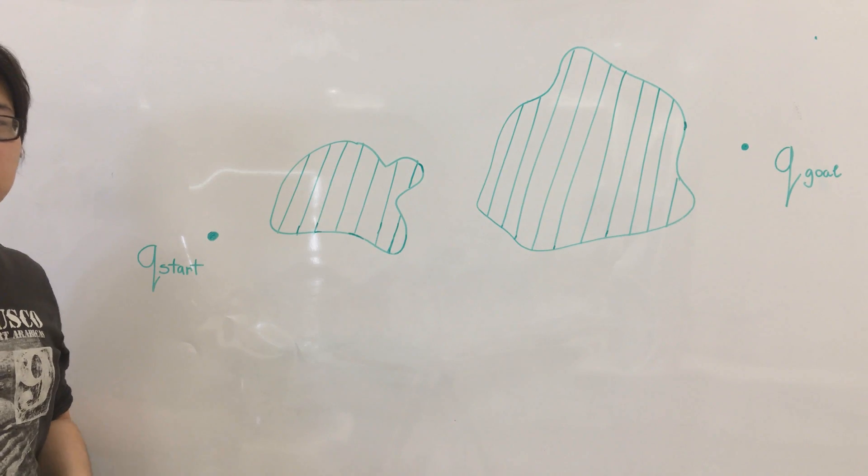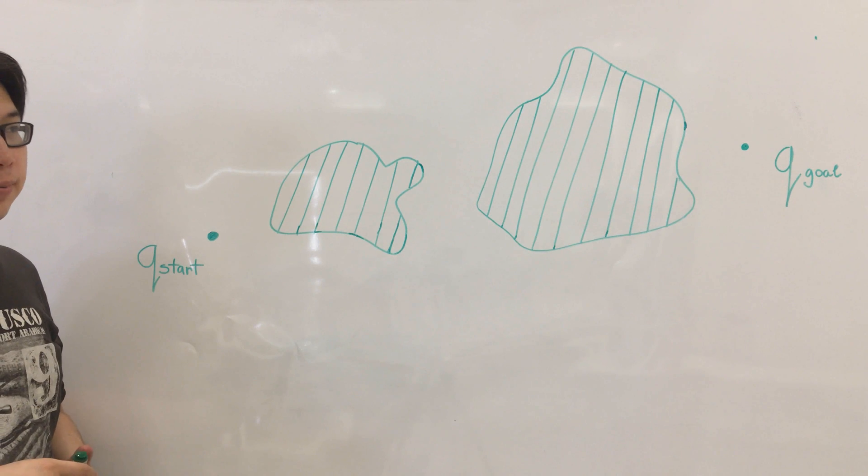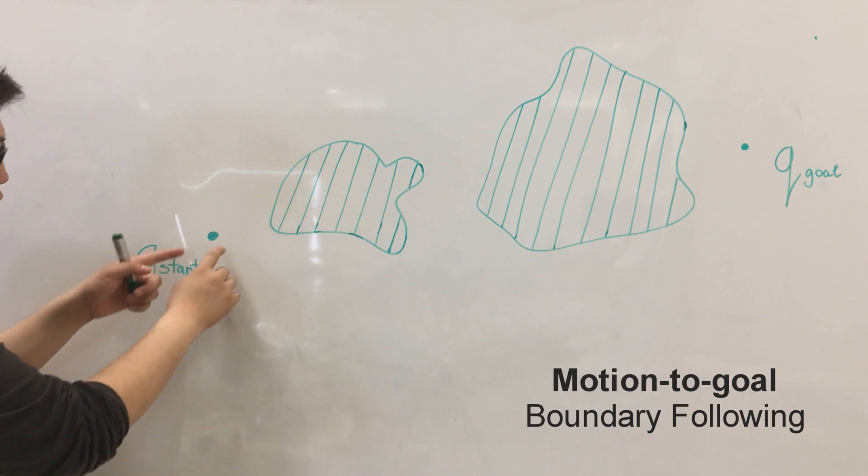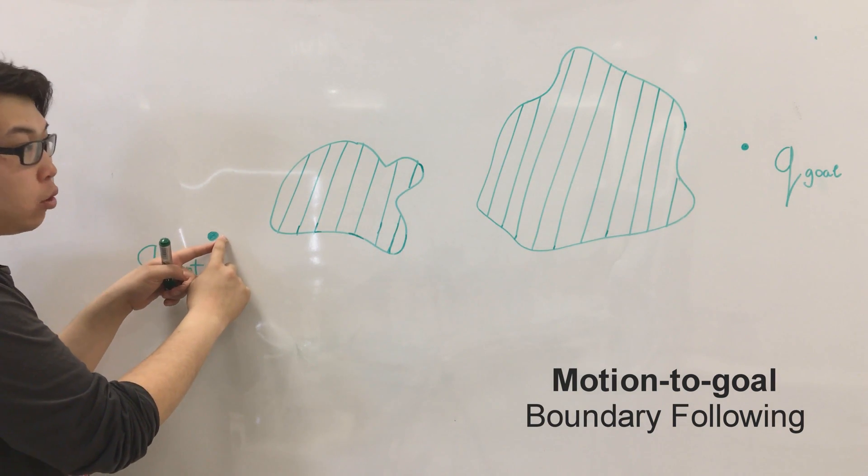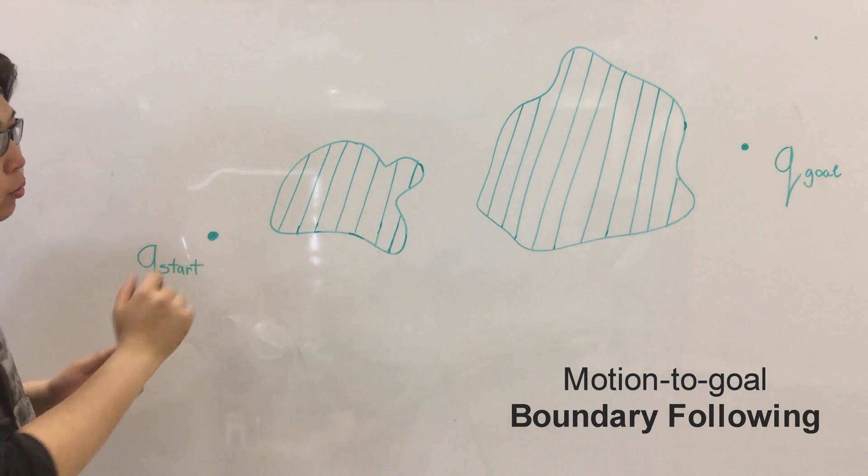Let us run the bug 1 algorithm. Firstly, the robot has two modes: motion to goal where it detects no obstacles and goes towards the goal point, and another one is boundary following.